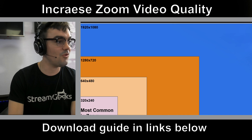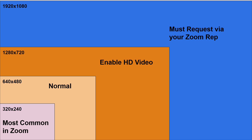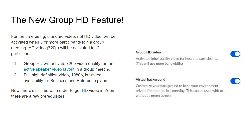In most normal scenarios, you are getting 320 by 240 in Zoom. It's normal to get 640 by 480, but you're probably not going to get 1280 by 720 unless you enable HD video on your account. To get 1080p video right now, you must request access via your Zoom representative — that's for business and enterprise clients.